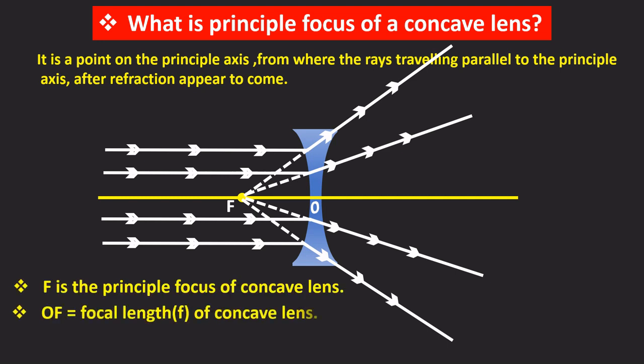And the distance between O and F, that is OF, is called focal length of concave lens. Now here the vertical plane PQ passes through the focus. This PQ is the focal plane of the concave lens.